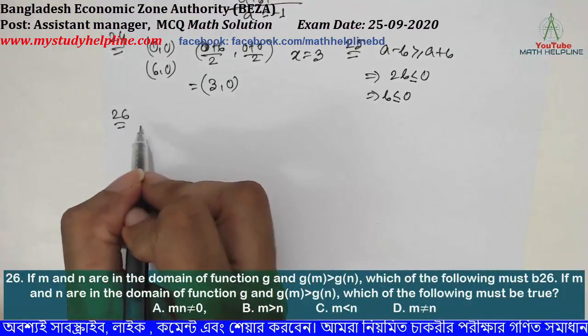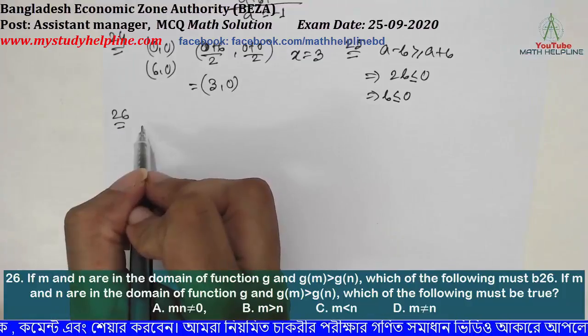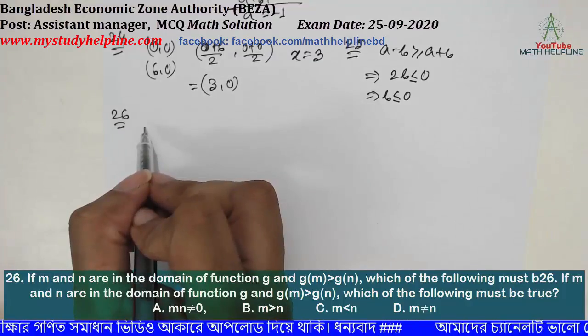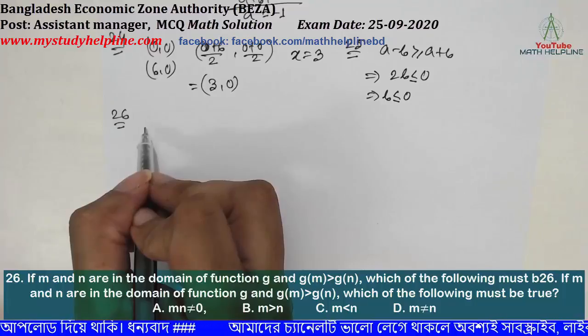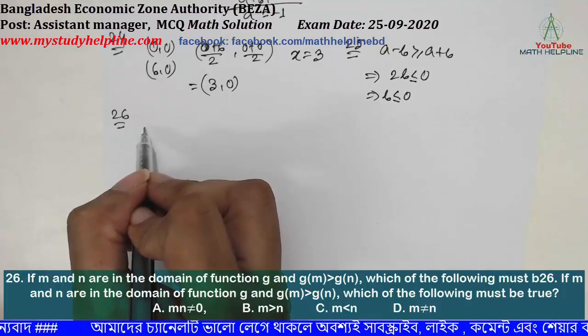If m and n are in the domain of a function z, and z(m) is greater than z(n), which of the following must be true?